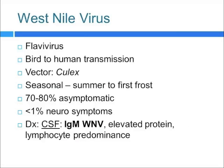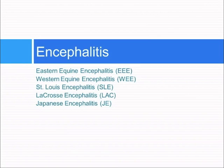Next is West Nile virus. It's also a flavivirus with bird-to-human transmission. The Culex mosquito is the predominant vector. There's a seasonal component — summer to the first frost, basically June to September in most areas. Seventy to 80% of patients are asymptomatic, and less than 1% actually get neurologic symptoms. If neurologic symptoms are present and you're highly suspicious, you want to get the IgM in the CSF, which will also show elevated protein and lymphocytic predominance.